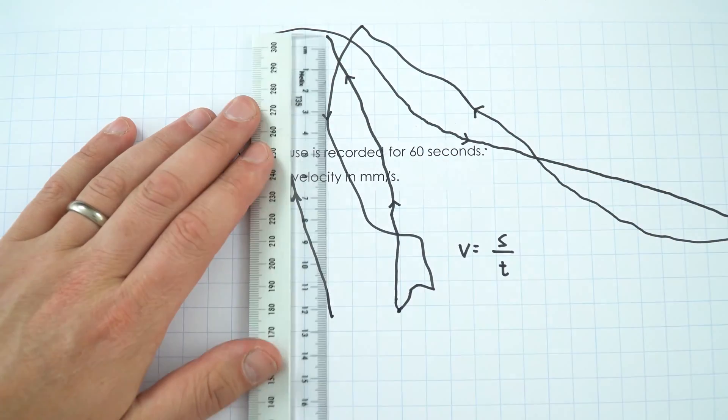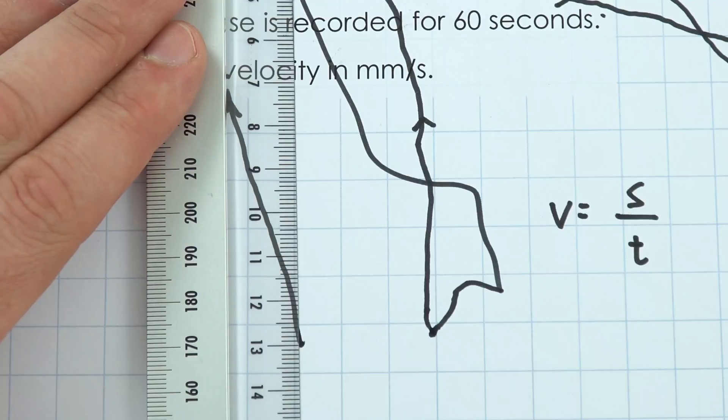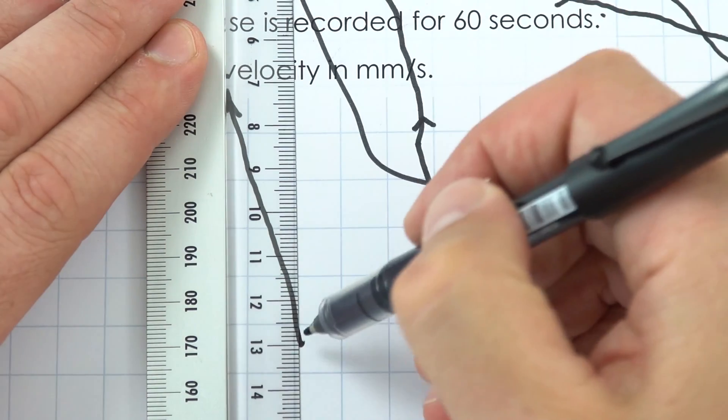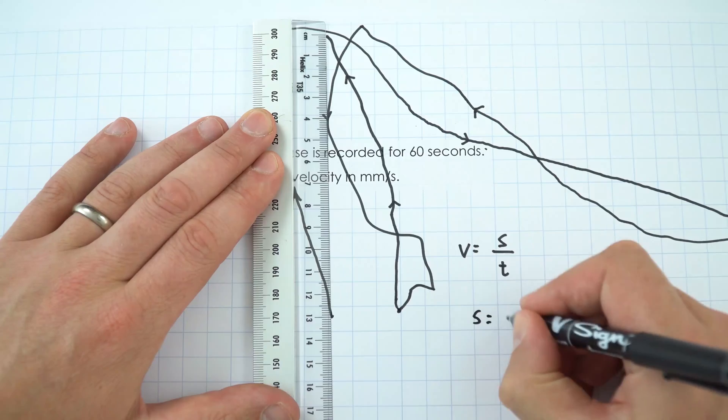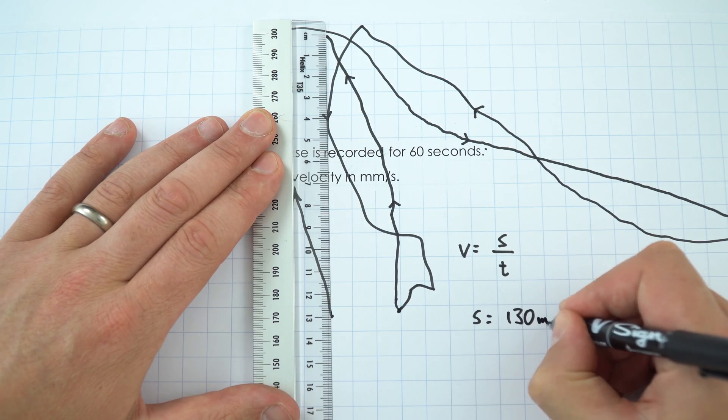So if I do that and I just line up this like that we can see that's 13 centimeters which is 130 millimeters.